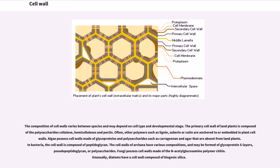The composition of cell walls varies between species and may depend on cell type and developmental stage. The primary cell wall of land plants is composed of the polysaccharides cellulose, hemicelluloses and pectin. Often, other polymers such as lignin, suberin or cutin are anchored to or embedded in plant cell walls. Algae possess cell walls made of glycoproteins and polysaccharides such as carrageenan and agar that are absent from land plants. In bacteria, the cell wall is composed of peptidoglycan. The cell walls of archaea have various compositions, and may be formed of glycoprotein S-layers, pseudopeptidoglycan, or polysaccharides. Fungi possess cell walls made of the N-acetylglucosamine polymer chitin. Unusually, diatoms have a cell wall composed of biogenic silica.